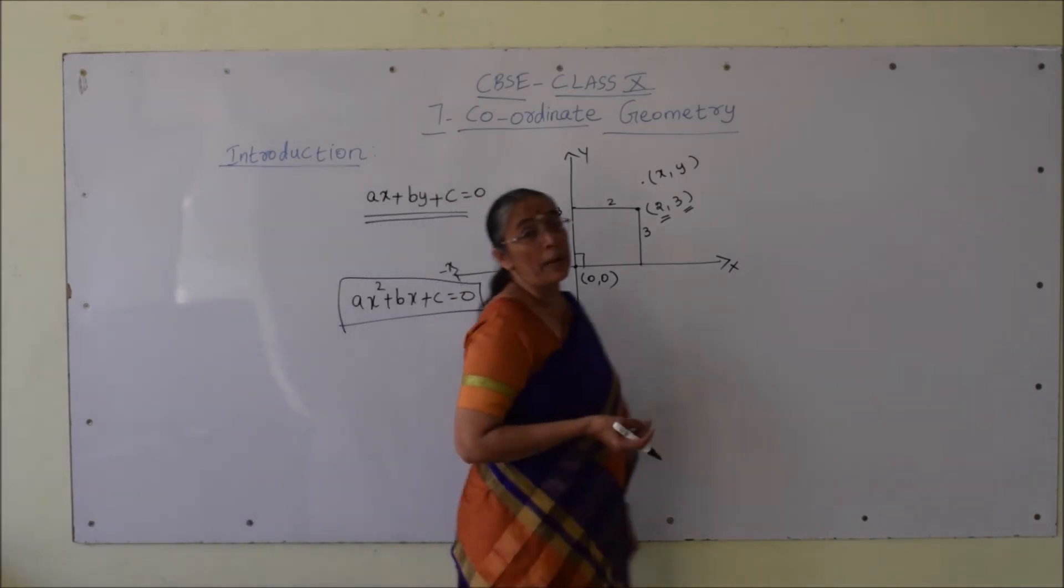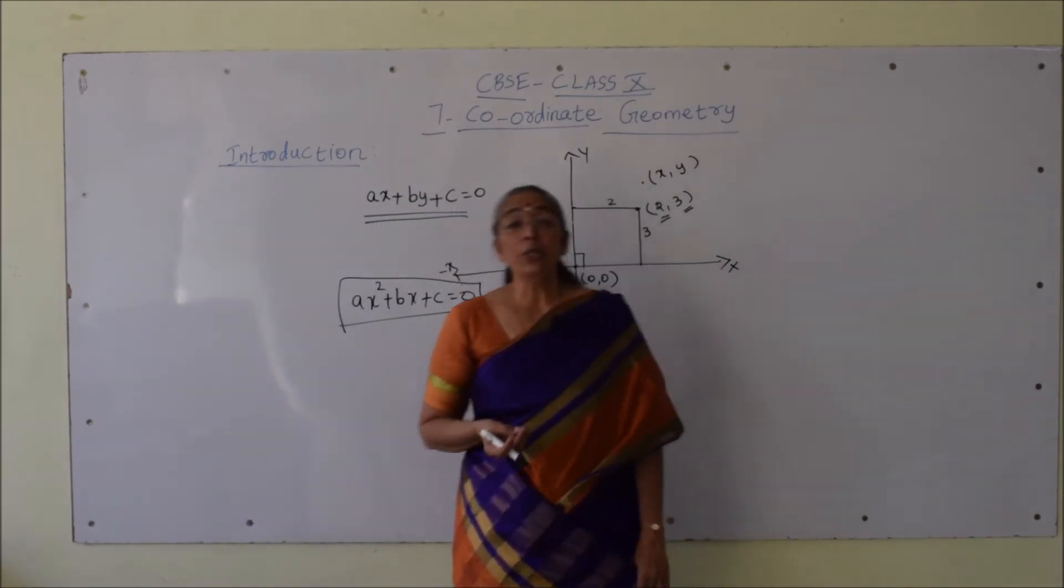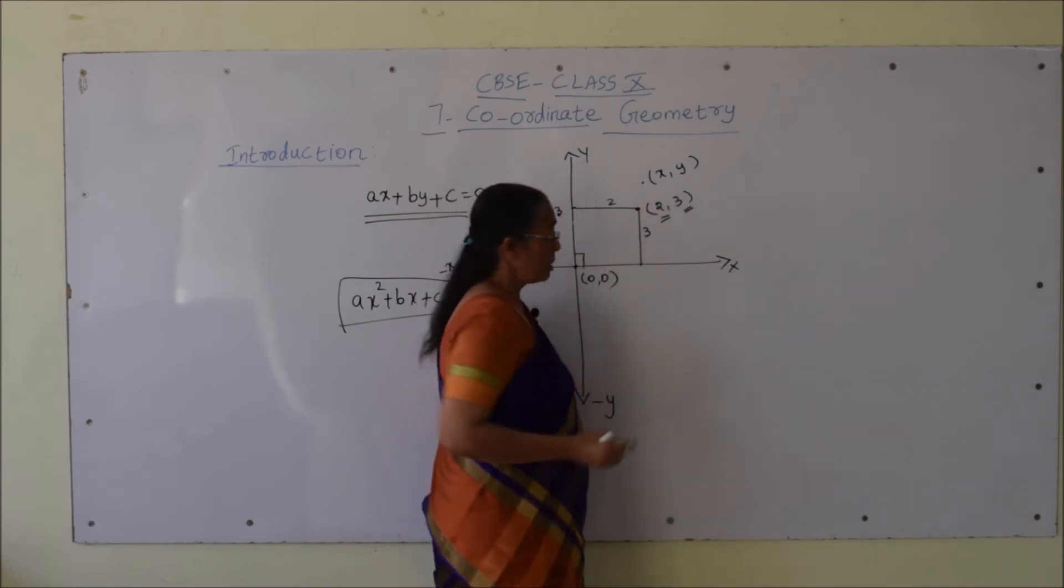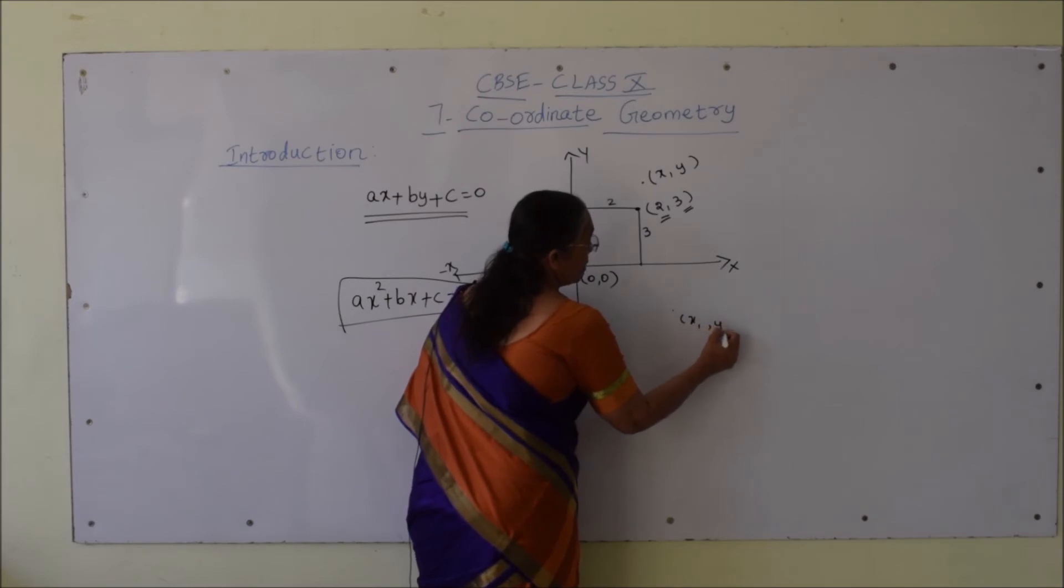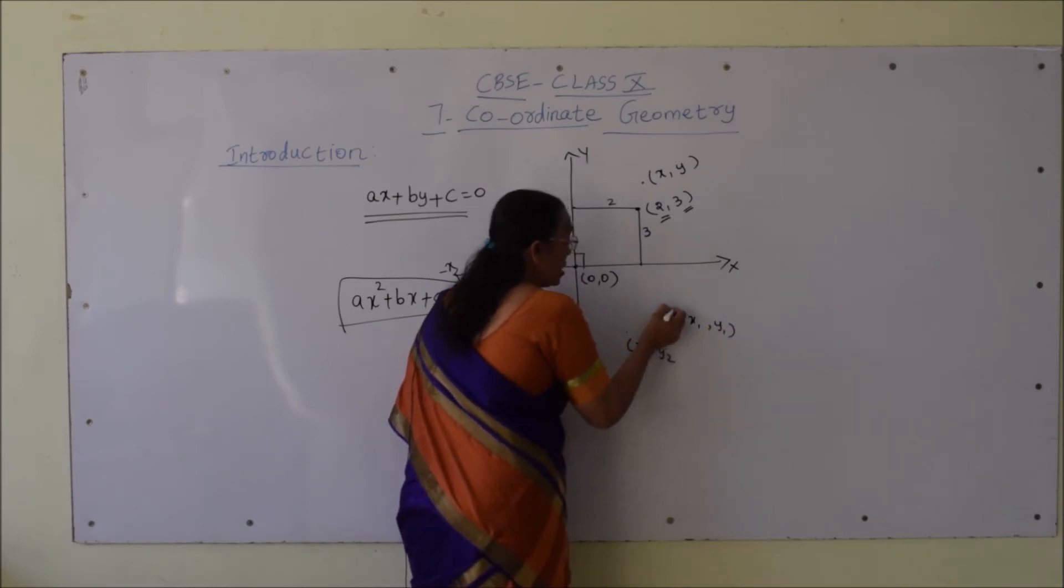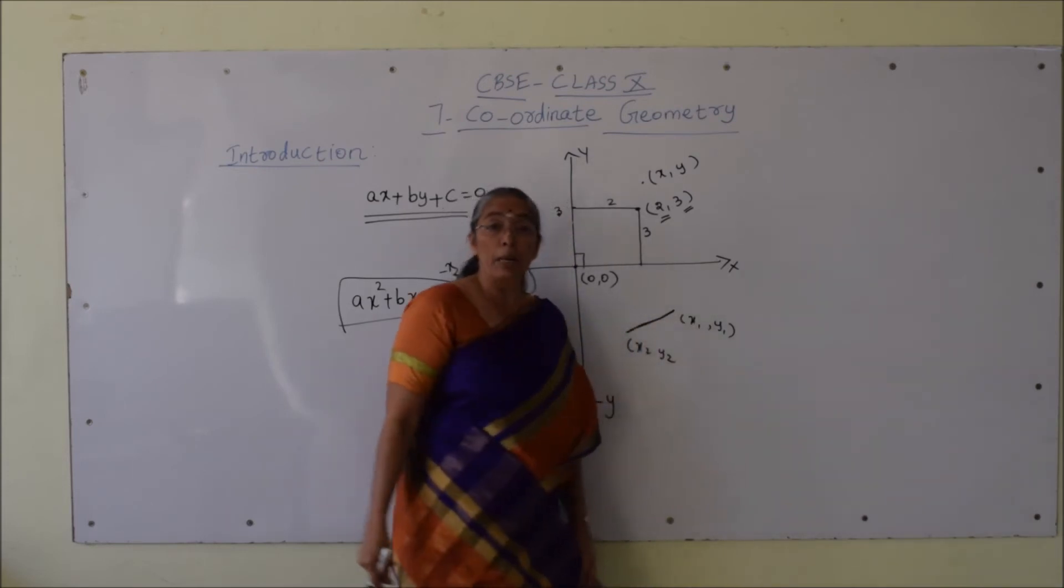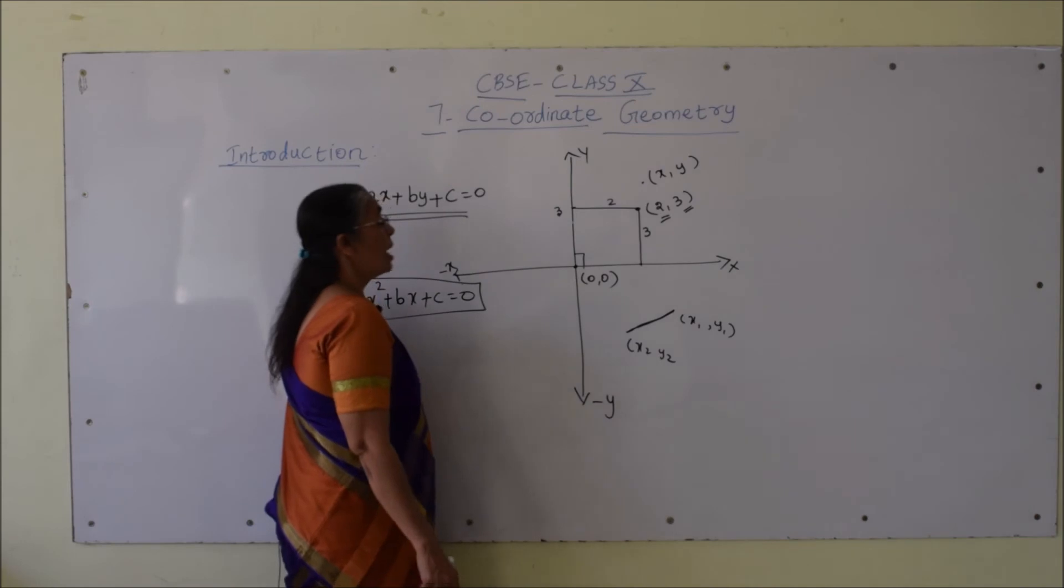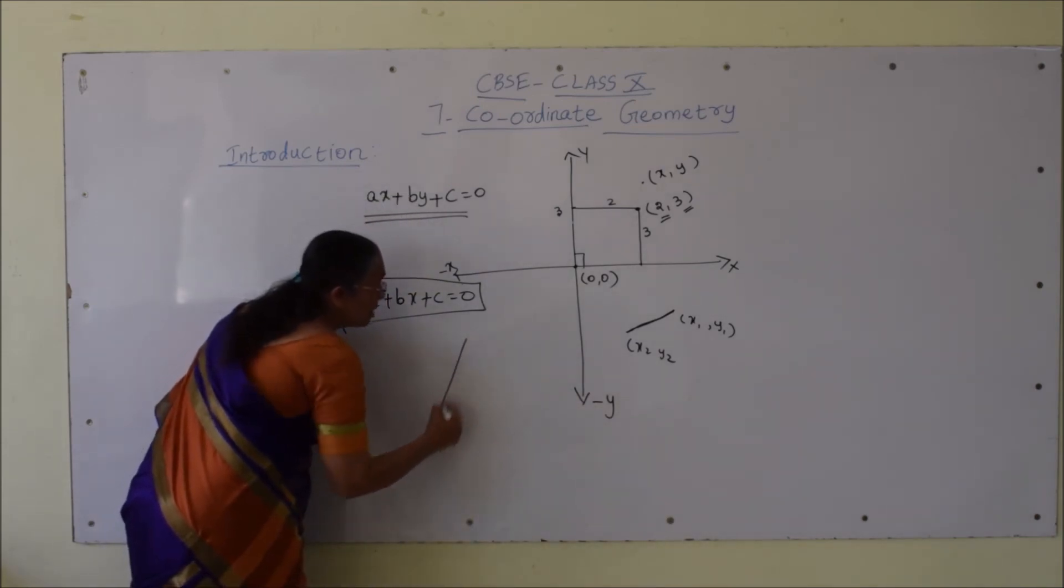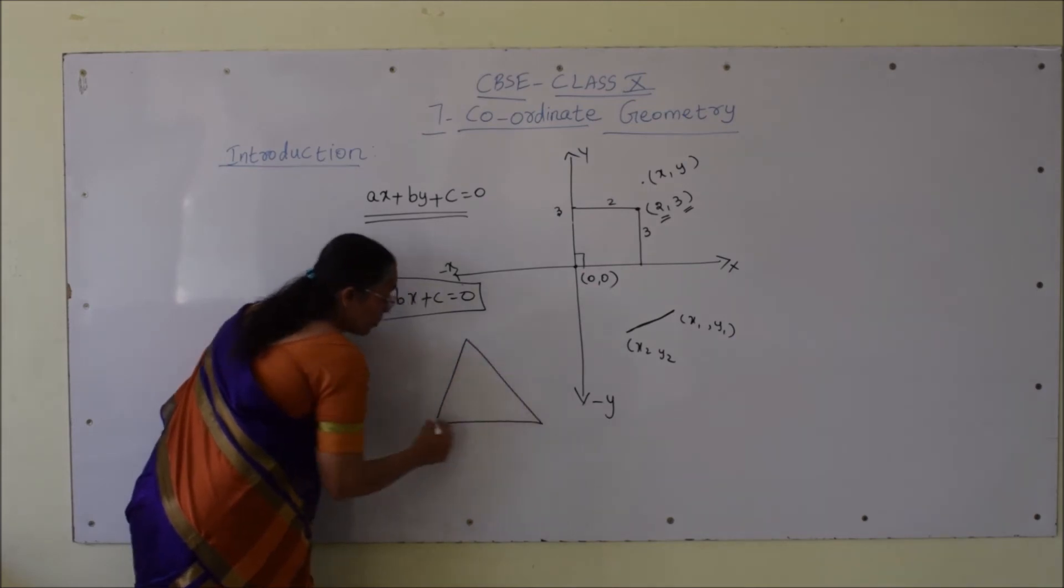In this chapter we will discuss the distance between two points. Suppose the points are (x₁, y₁) and (x₂, y₂)—how can we find the distance using coordinate geometry? We'll also find the area of a triangle when its vertices are given, such as vertex A as (x₁, y₁) and vertex B as (x₂, y₂).